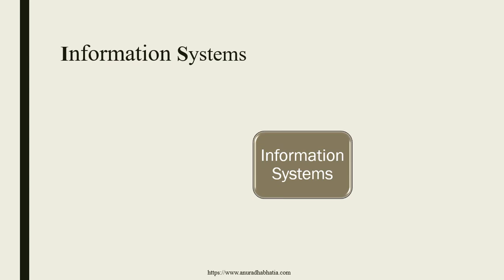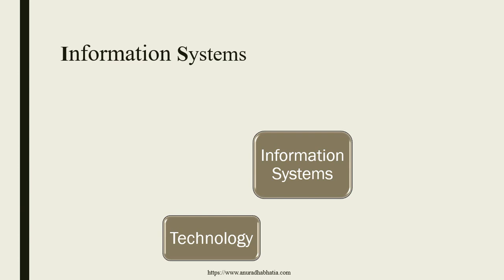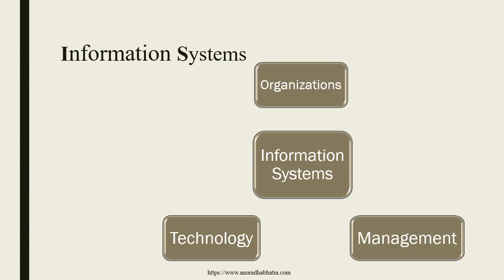What are information systems? Information systems contribute with three different parameters: technology, management, and organization. We design and develop an information system, and all these three link together to make an efficient information system. Technology depends on what kind of system an organization needs to have, and it plays an important role.